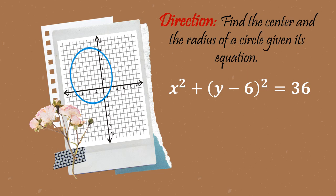For our next example, we have in center-radius form again: x squared plus (y minus 6) squared equals 36. Observe the given equation — we have x squared here. Recall the previous lesson: what is the value of h when we get x squared only? Basically, x squared originally came from (x minus 0) squared.